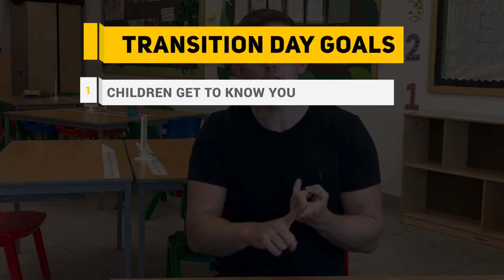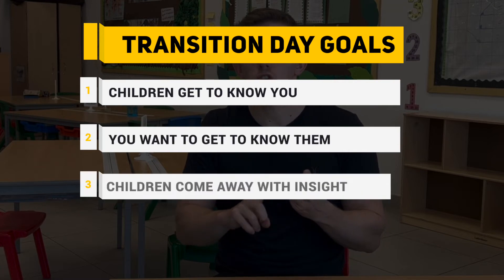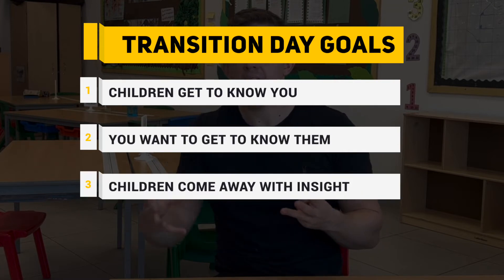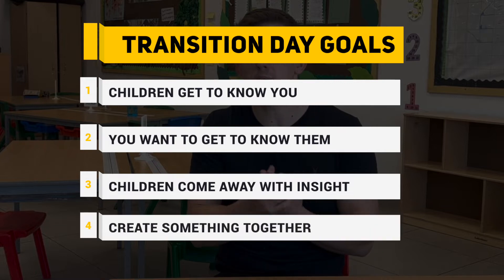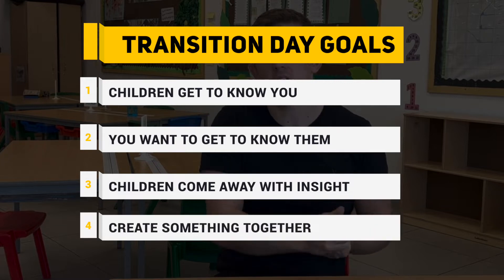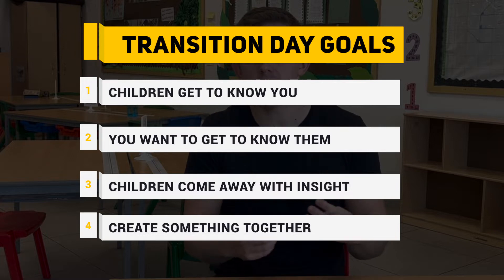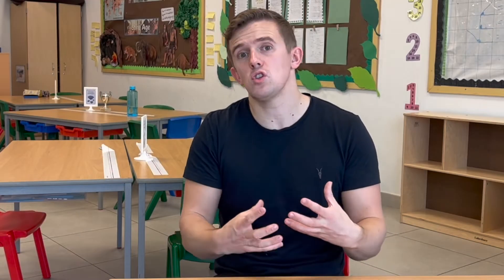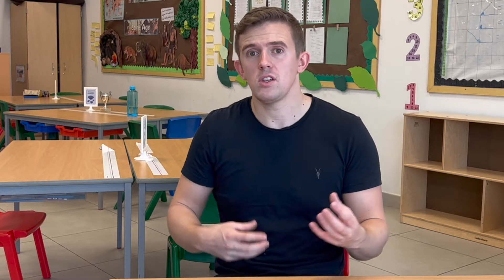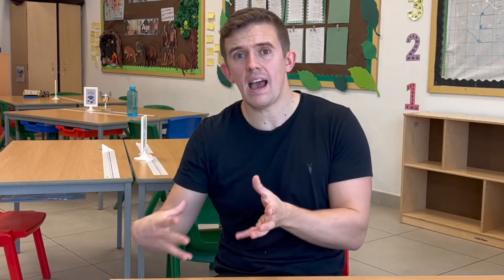When it comes to transition, essentially what you've got to try and do is only a few things. The children need to try and get to know you. You want to get to know the children. The children should come away with a better insight of what the year ahead is so that they feel a little less nervous. And it might be nice to have some things so that the children come into a classroom set up with things they have created — some different activities where the children have created things for displays. Let's delve into some of the different activities so that you can get to know them and also have something to produce.